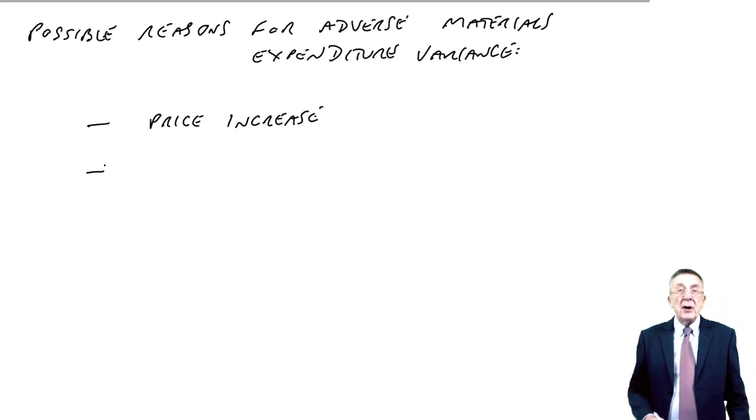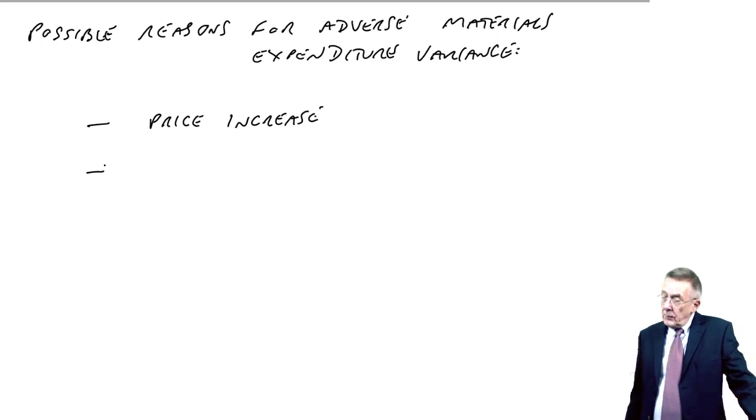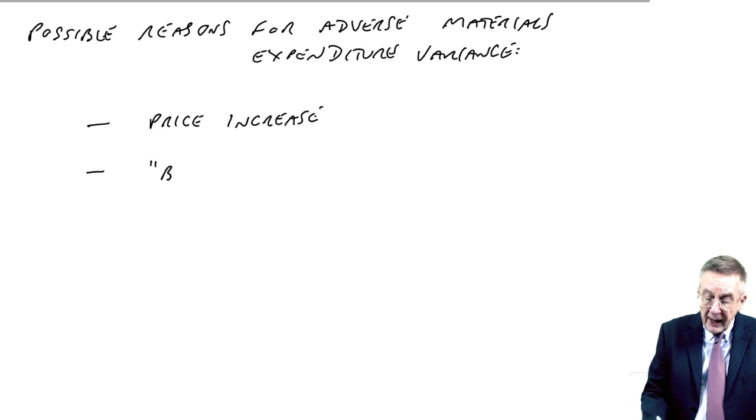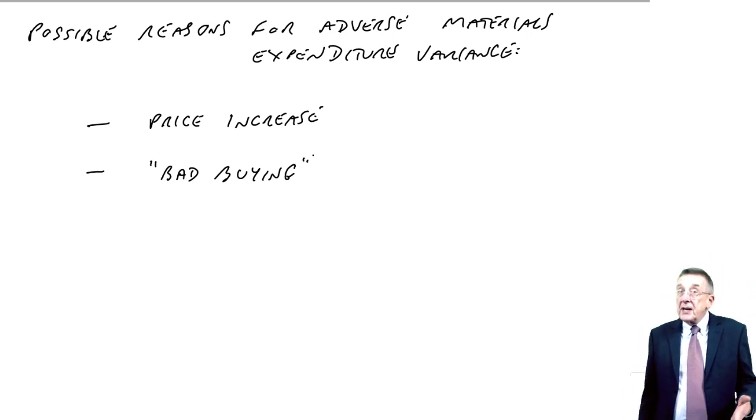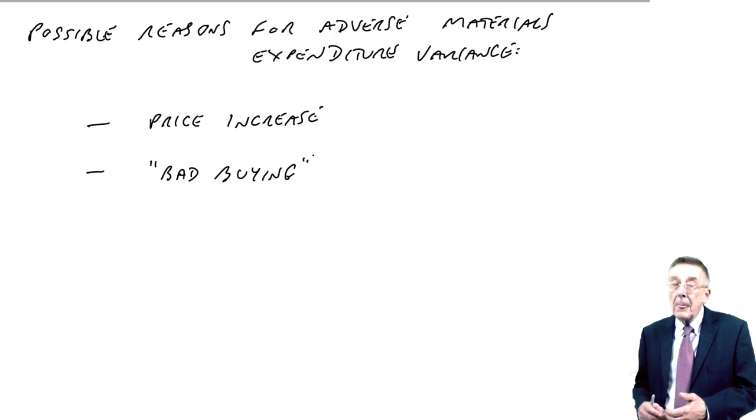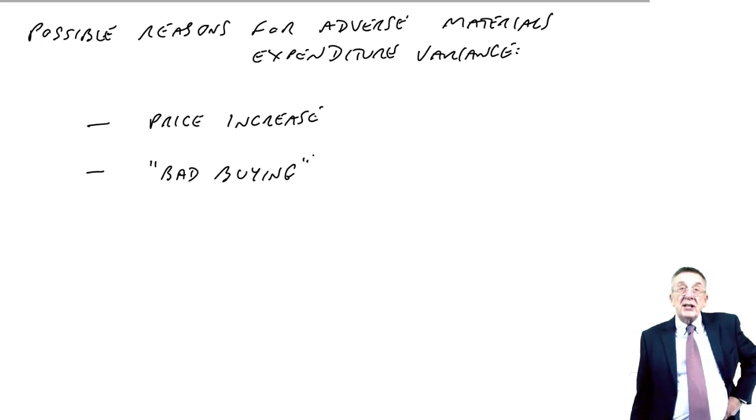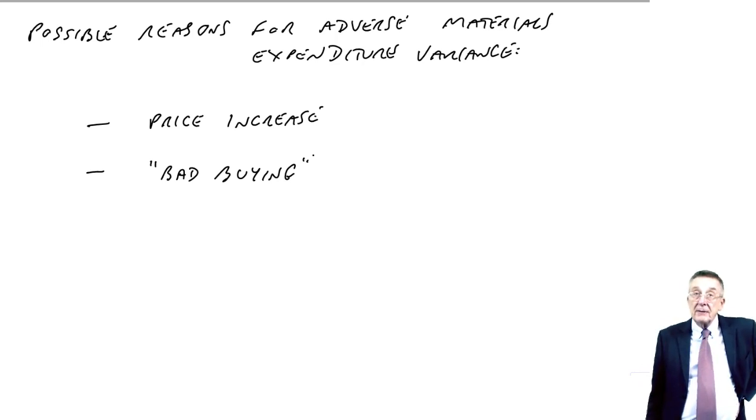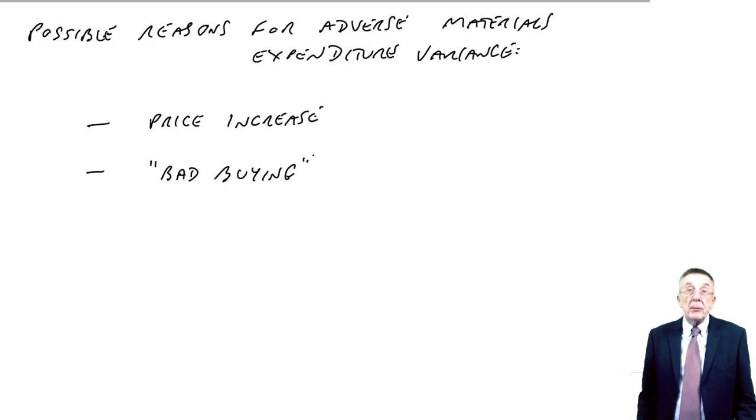However, it may not have been that. Maybe the price hasn't gone up at all and should still be 450 a kilo. But maybe whoever's responsible, the purchasing manager, has perhaps done a bad job. I call it bad buying. What I mean is, maybe we could obtain the material at 450, but maybe the purchasing manager has simply gone to the wrong supplier and ended up paying more. Or maybe we budgeted on 450 assuming we got discounts and maybe the purchasing manager didn't fight for the discounts and again ended up paying more. There's a second reason. The first one, not much we can do about it. The second one, of course we can. The purchasing manager, either we should replace him or we should teach him how to buy better.